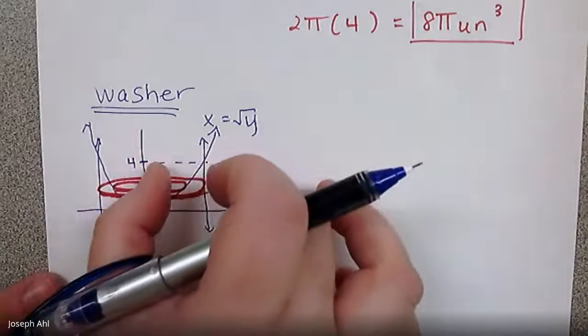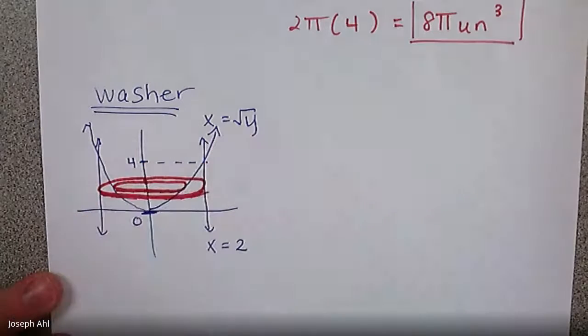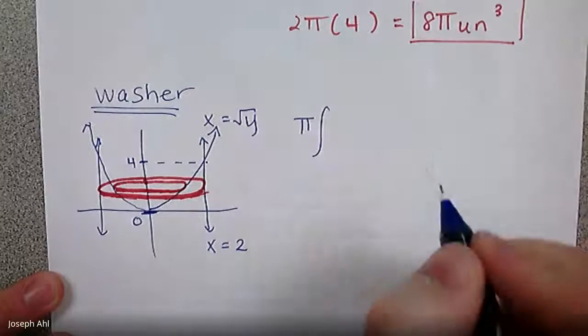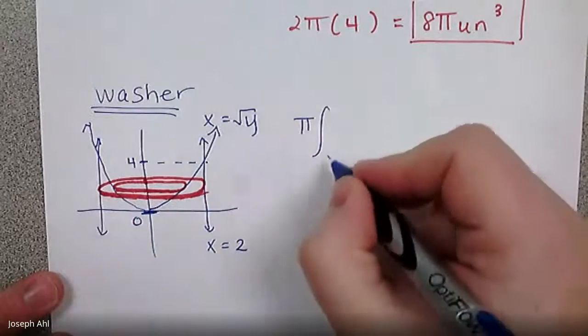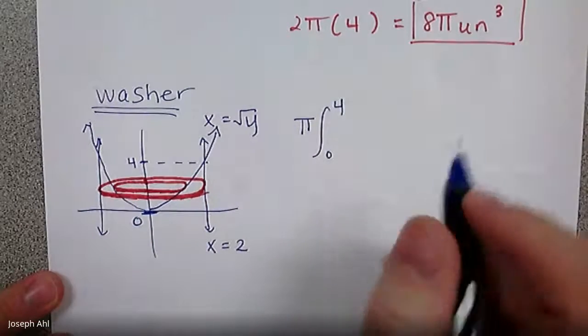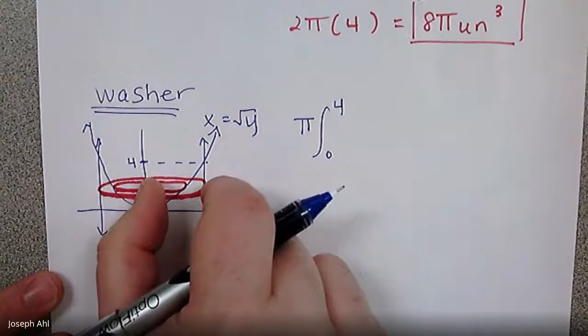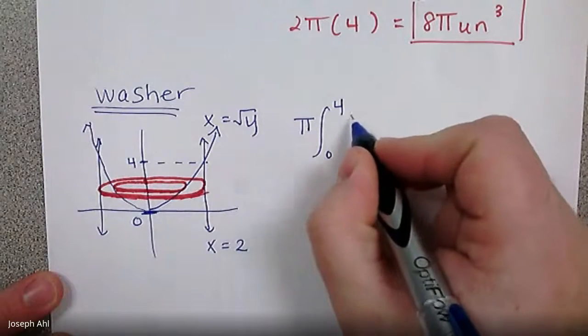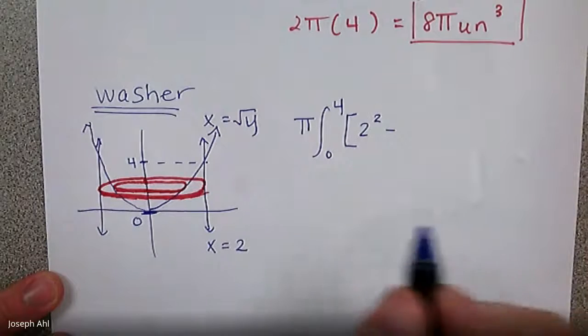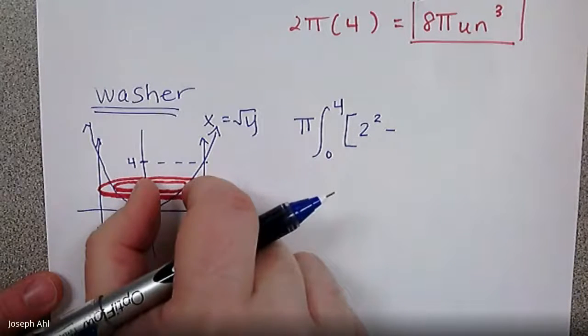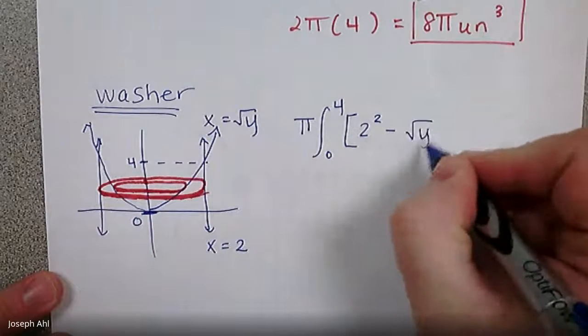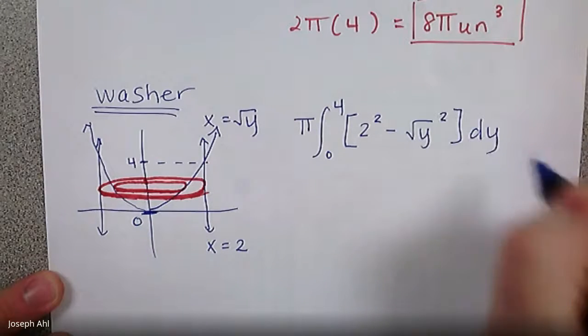And we're going to think about the big radius here, squared minus the smaller radius squared. So using the washer technique, you would have π times the integral from 0 to 4. The big radius is the distance to this line x equals 2. So that's just going to be 2 squared. And then minus the smaller radius is the distance to the function x equals the square root of y. So it's going to be square root of y squared. And now this is a dy.